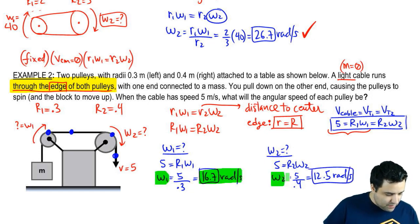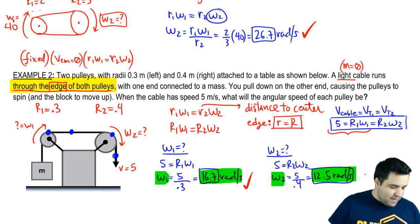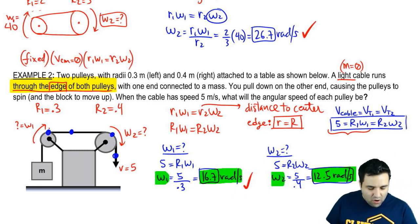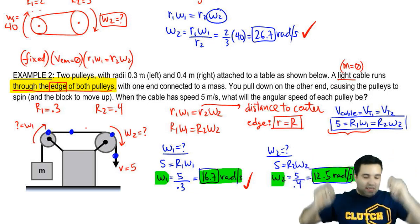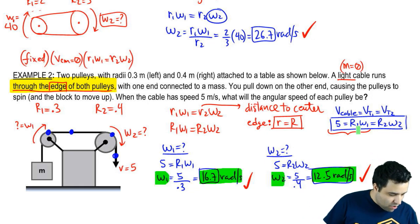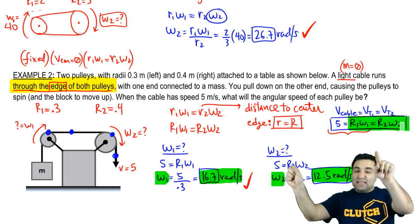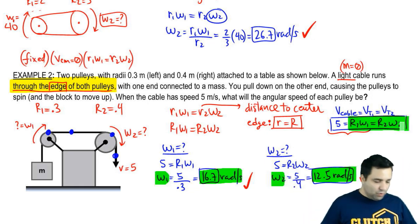So that's it for omega 1, omega 2. The key point that I want to highlight here is that not only are these two velocities the same at the edge, which allows us to write that R1 omega 1 equals R2 omega 2, but also that they equal the velocity of the cable that pulls them. That's what's special about this problem.